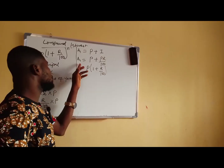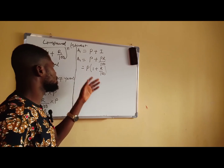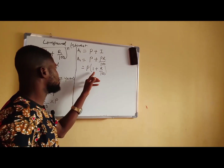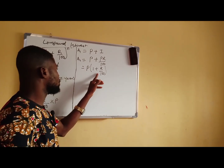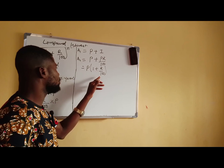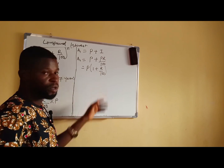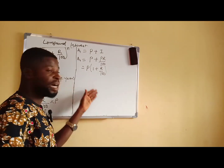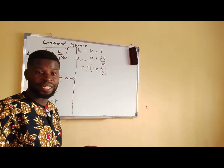Now, A1 is equal to P in bracket 1 plus R all over 100. This is the amount for the first year.